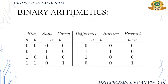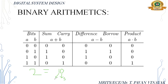Binary mathematics — this is very important. 0 plus 0: sum is 0, carry is 0. 0 plus 1: sum is 1, carry is 0. 1 plus 0: sum is 1, carry is 0. 1 plus 1 equals 2; in binary, 2 is written as 1 0. Here we get two digits — the rightmost 0 is the sum and the 1 is the carry.